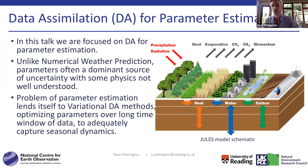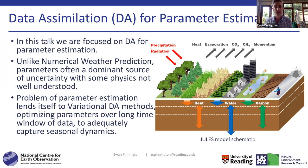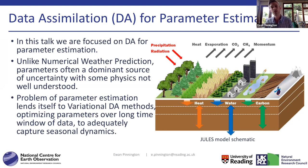For parameter estimation, it lends itself to more variational data assimilation methods that can use a whole time series of observations, because we don't want to retrieve time-varying parameters. All the parameters we're considering here are time-invariant, so we want to optimize over a long time series of data — usually about a year-long window — so that we can capture seasonal dynamics with any parameters we might recover.